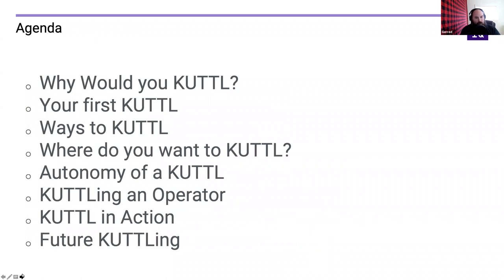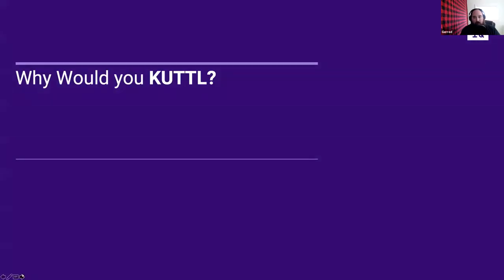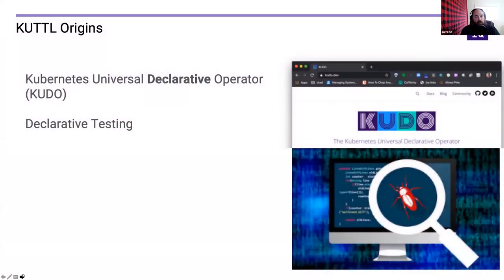Today's agenda covers: why you would use KUTTL, what the first experience with KUTTL looks like, ways you might want to interact with KUTTL, the anatomy of a KUTTL operator test, how to run KUTTL against an operator, a live demo, and the release roadmap. The core motivation comes back to building a declarative testing framework — we talk a lot in Kubernetes about wanting to be declarative in everything we do, and we believe that should apply to testing as well.